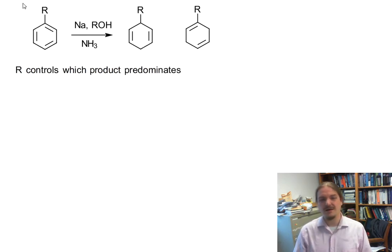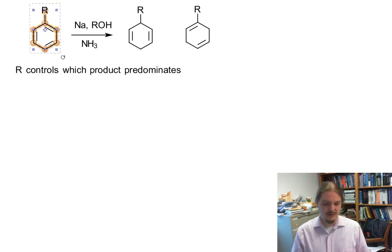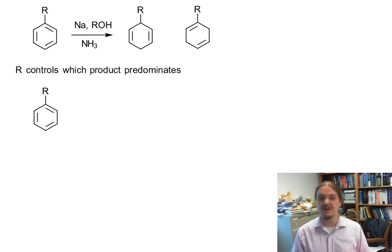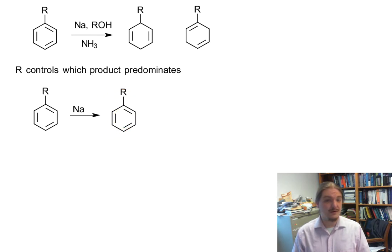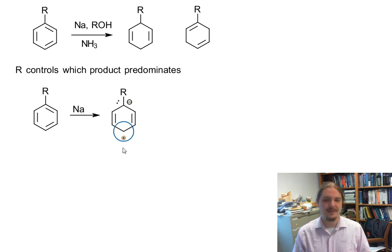In order to understand what factor R has, we're going to look a little bit into the intermediates that form during the course of the reaction. We're just going to look at the structure of the intermediates. After the first single electron transfer from sodium, the reaction forms a radical anion — we have a negative charge and a radical on opposite sides of the ring from each other.